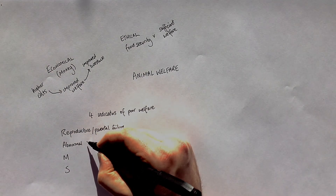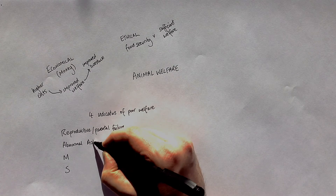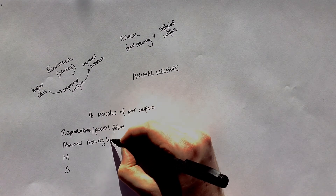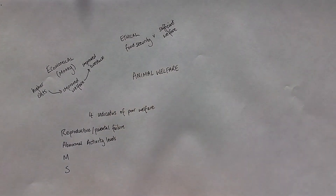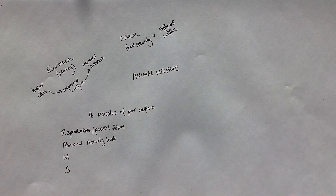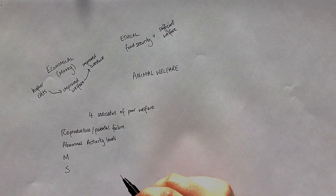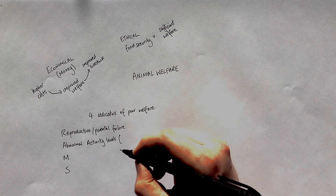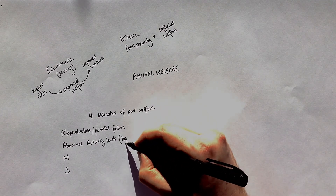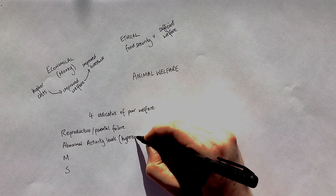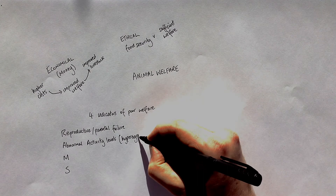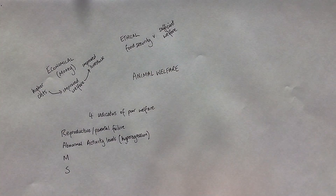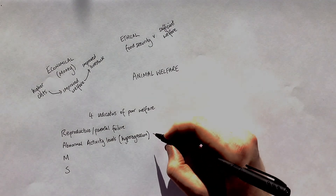The A is for abnormal activity levels, which is also a sign of poor animal welfare. This could be in the form of increased activity levels, such as hyper-aggression, or decreased activity levels, such as excess sleep.